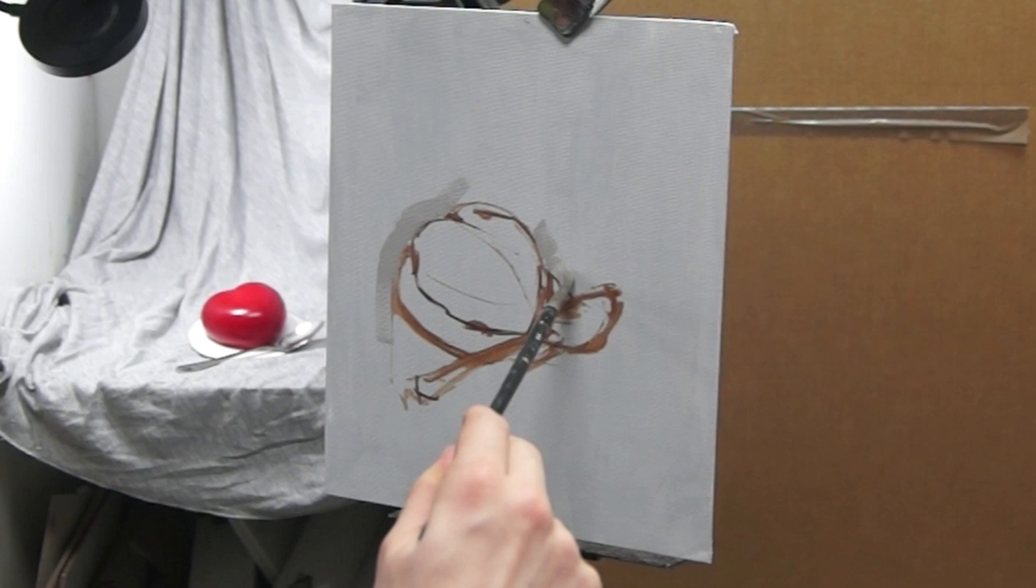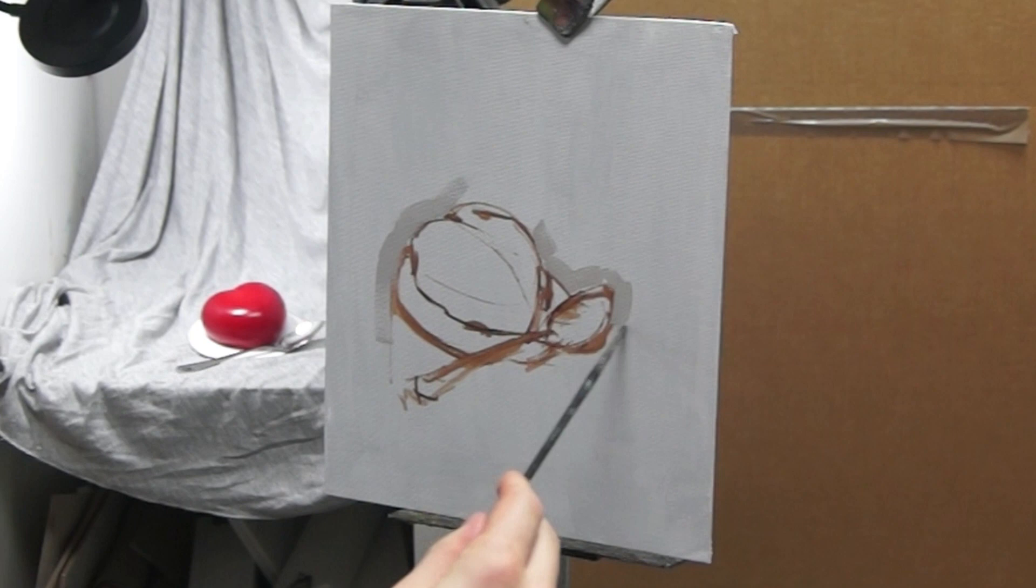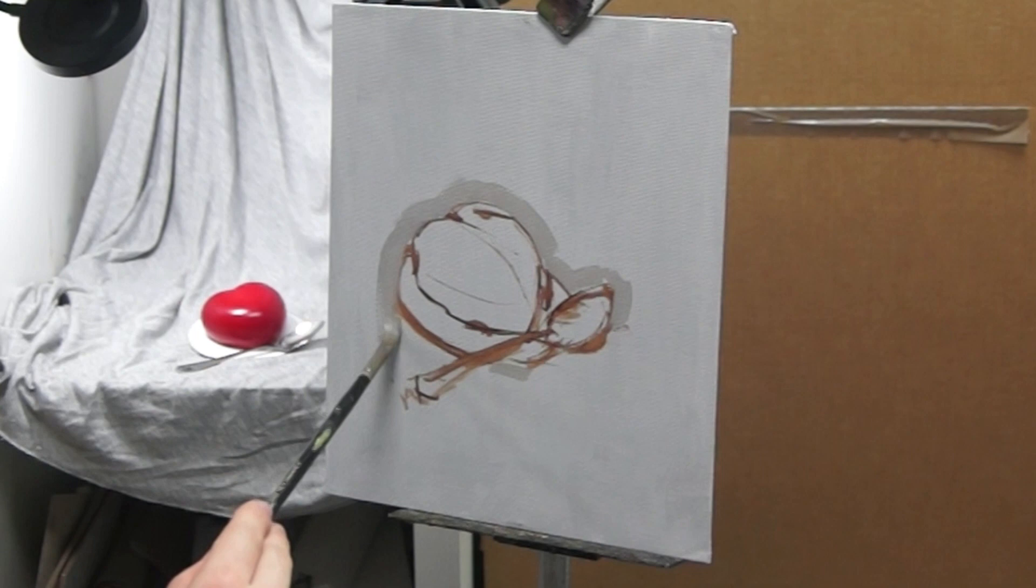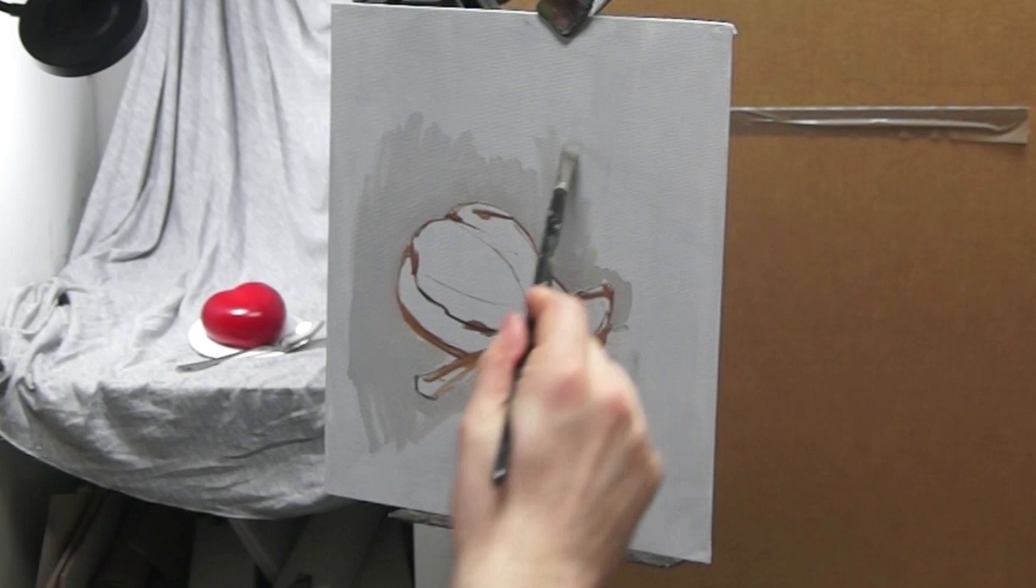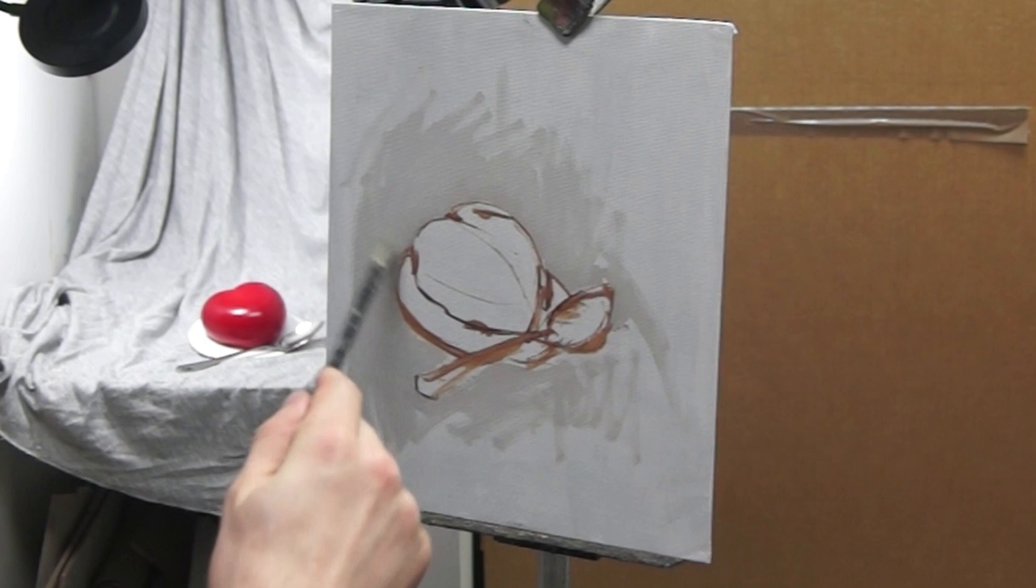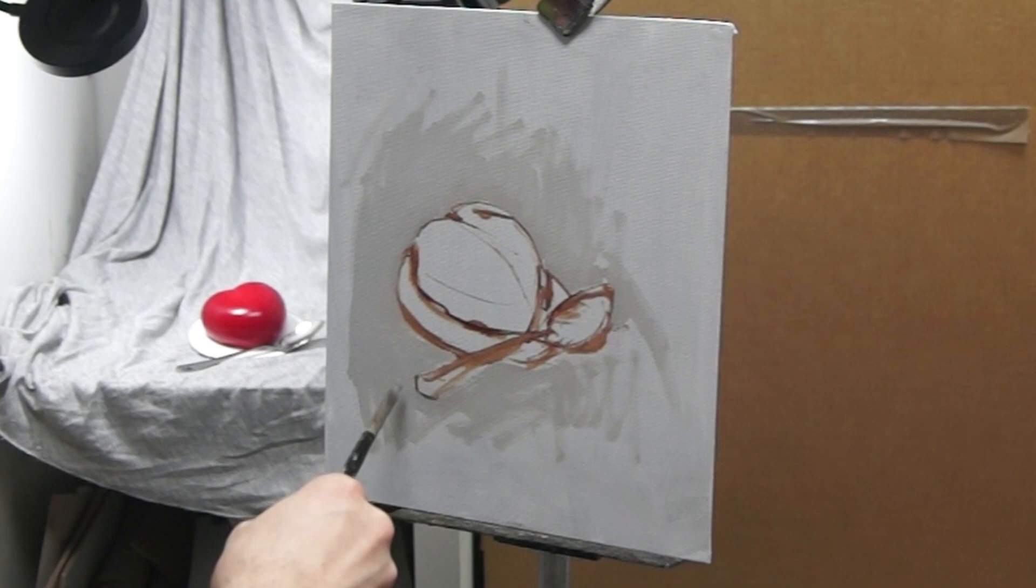Now I'm starting to redefine and get a bit more specific with the contour of the cake and the spoon using this grey mix that I've made for the background cloth. At the moment I'm keeping the background very simple. Later on I will be a bit more specific with the sections of light and some of the shadows and folds within the cloth, but my main focus right now is to try and get the shapes of the heart, the base and the spoon, which are really the focal points of the composition, as accurate as I can.